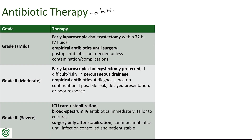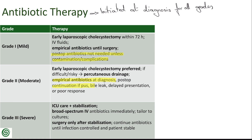Antibiotics are a core part of initial management for all patients with suspected or confirmed acute cholecystitis and are initiated at diagnosis for all grades. In Grade 1 (mild) cases, they are continued until early surgery, with postoperative antibiotics generally not required unless intraoperative contamination or complications occur. In Grade 2 (moderate) cases, empirical antibiotics are always started at diagnosis, and their continuation postoperatively depends on intraoperative findings such as pus, bile leak, and the patient's clinical response.